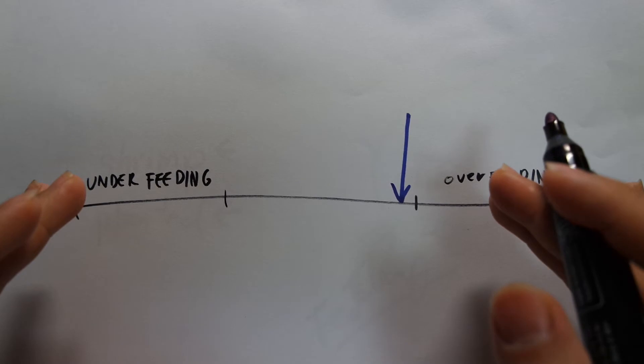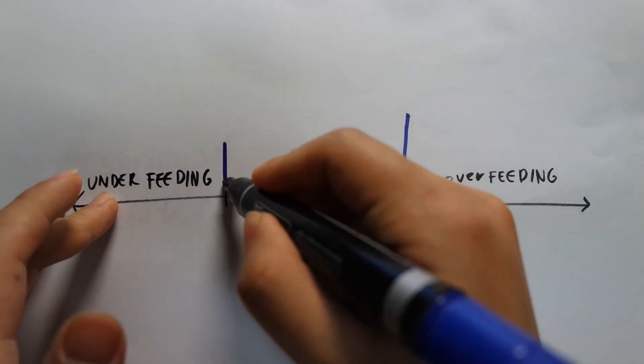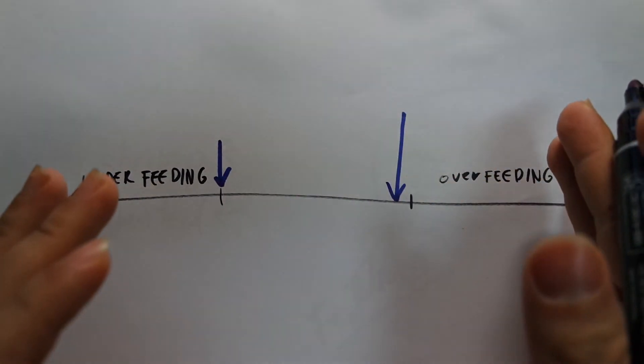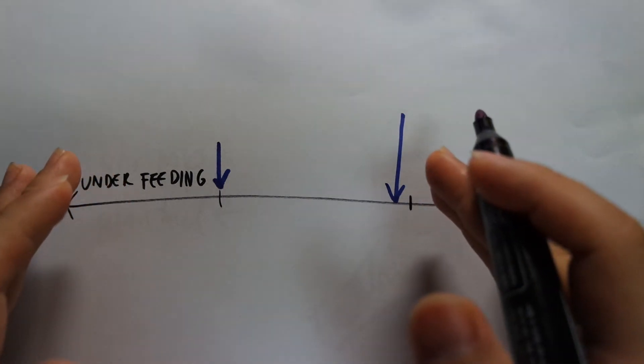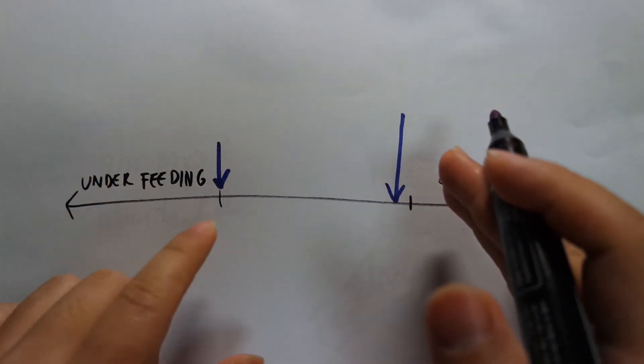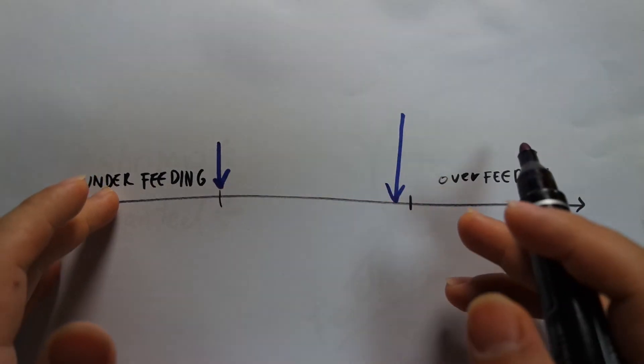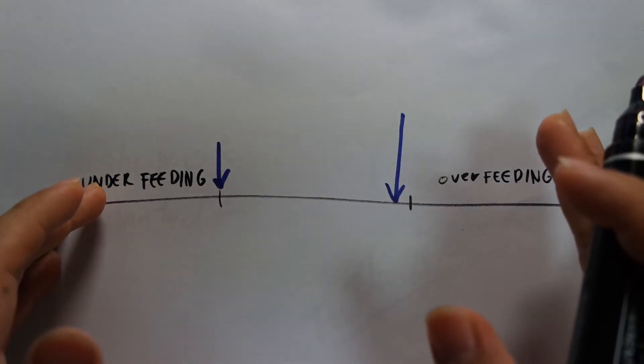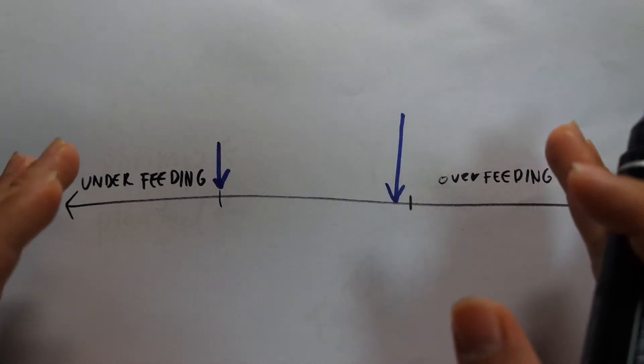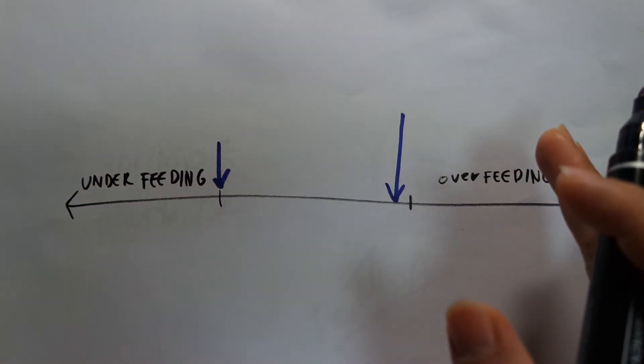What we should be discussing more is where is this point right here where we are feeding the minimum amount but it is just enough to keep your fish healthy and happy. Where is that point? We should be discussing that and we should be trying to get there. So point one is we should try to reduce feeding and that will make it vastly easier to accomplish a no water change tank.